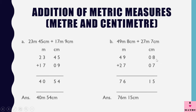7 plus 8 is 15 — 5 here and 1 carry over. 1 plus 0 plus 0 is 1. 9 plus 7 is 16 — 6 and 1 carry over. 4 and 1 is 5, and 5 and 2 is 7. So the answer is 76 meters 15 centimeters.